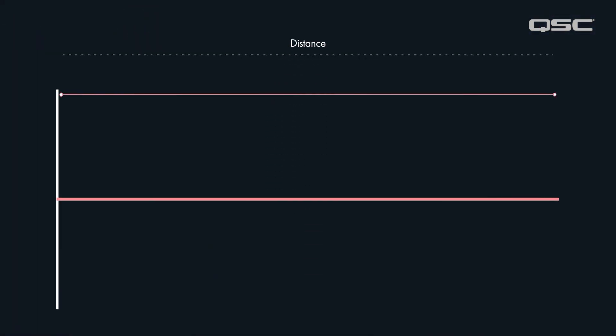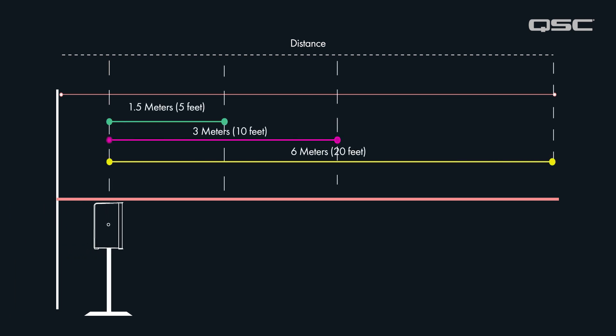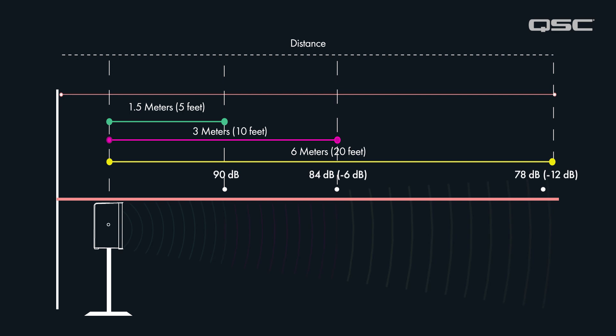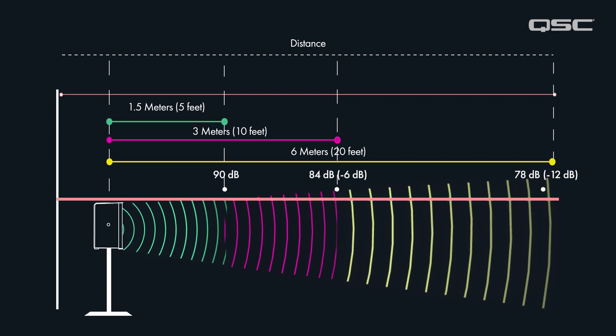The inverse square law states that in a controlled indoor environment, direct sound level will decrease by 50% or 6dB every time it doubles in distance from the source. We can use this information as a guide to help find the best location for a delayed or fill loudspeaker.